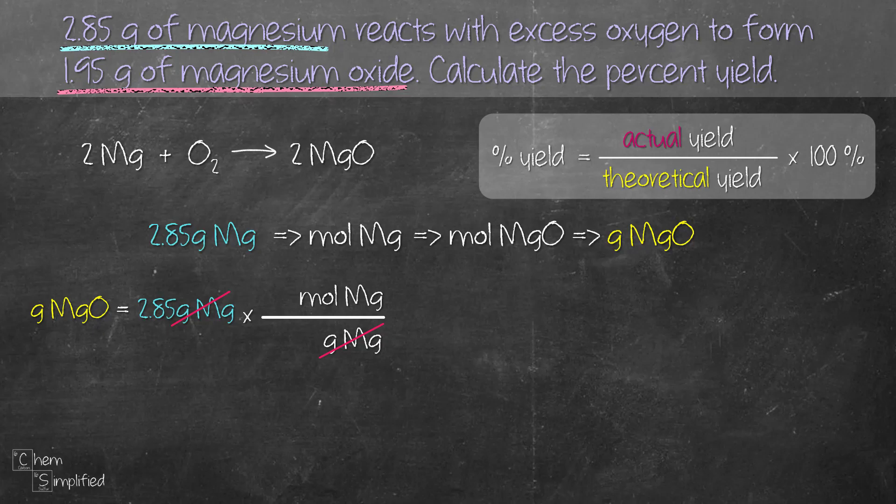We need the atomic mass of magnesium. We look it up in the periodic table. For one mole, it's 24.305 grams. The atomic mass given in the periodic table is always for one mole. Regardless of what number is in front in a balanced equation, always find the molar mass for one mole.